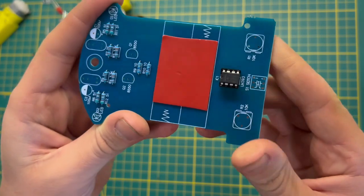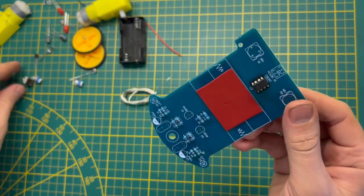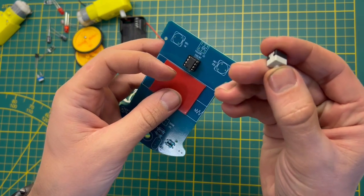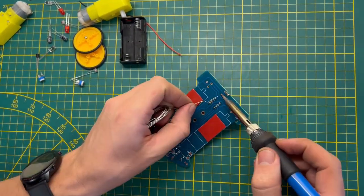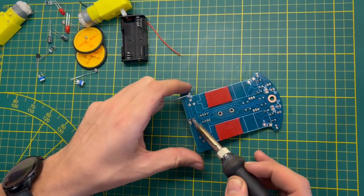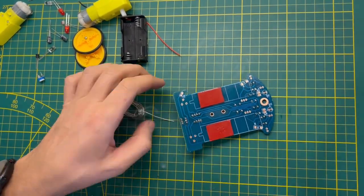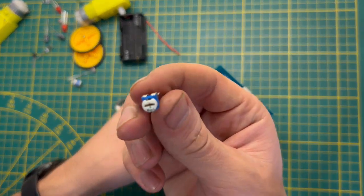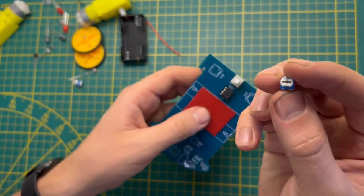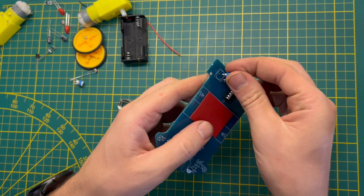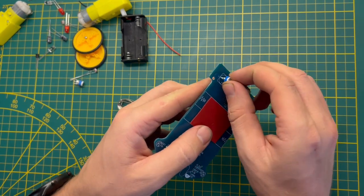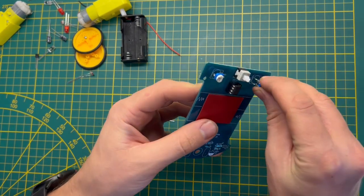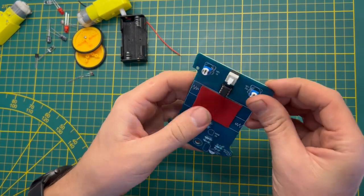All right, it's on the place. Now I would like to install the switch. Okay, now by the plan to install these resistors, two pieces 10 kilohm.